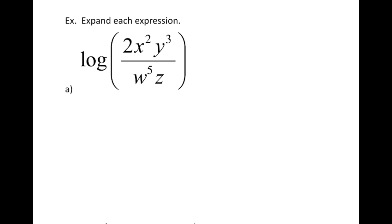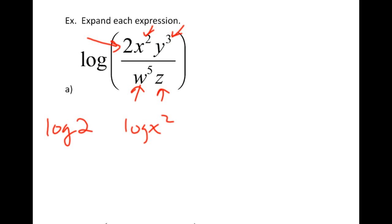Take a look at this: I've got the common log of 2x squared y cubed all over w to the 5th times z. I've got 5 different items inside this log, either being multiplied or divided, and I will give each of them their own log. So I get common log of 2, common log of x squared, common log of y cubed, common log of w to the 5th, and the common log of z.